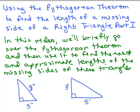This is part 1 of using the Pythagorean Theorem. In this video, we'll briefly go over the Pythagorean Theorem and then use it to find the exact and approximate lengths of the missing sides shown on the two right triangles here.